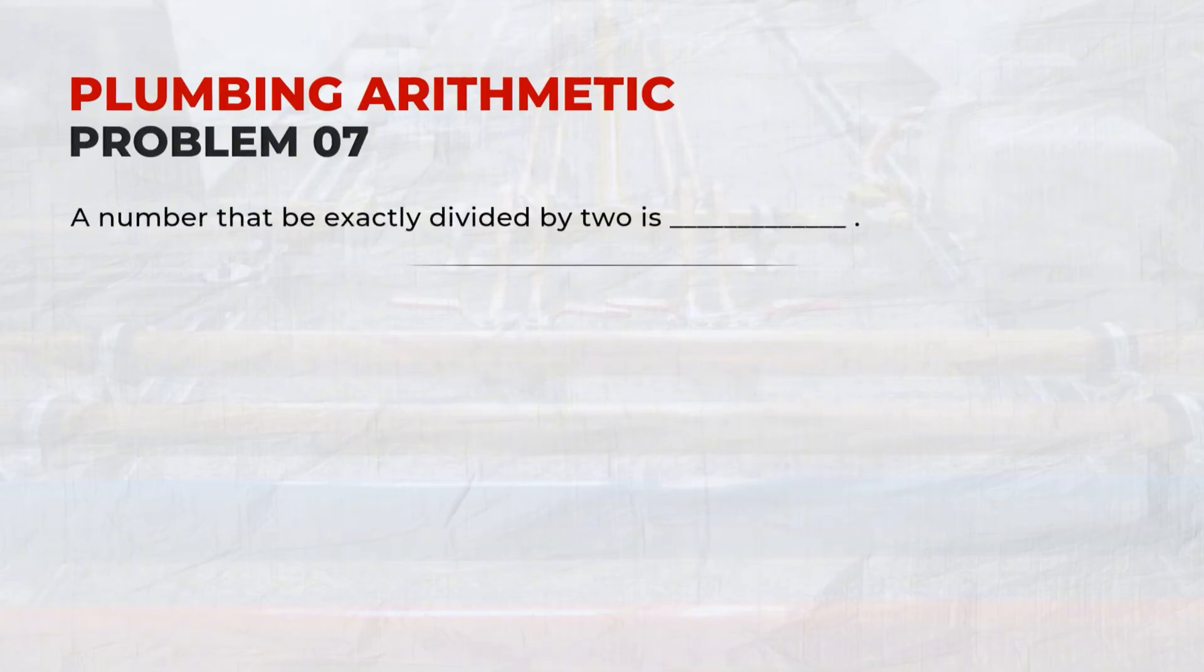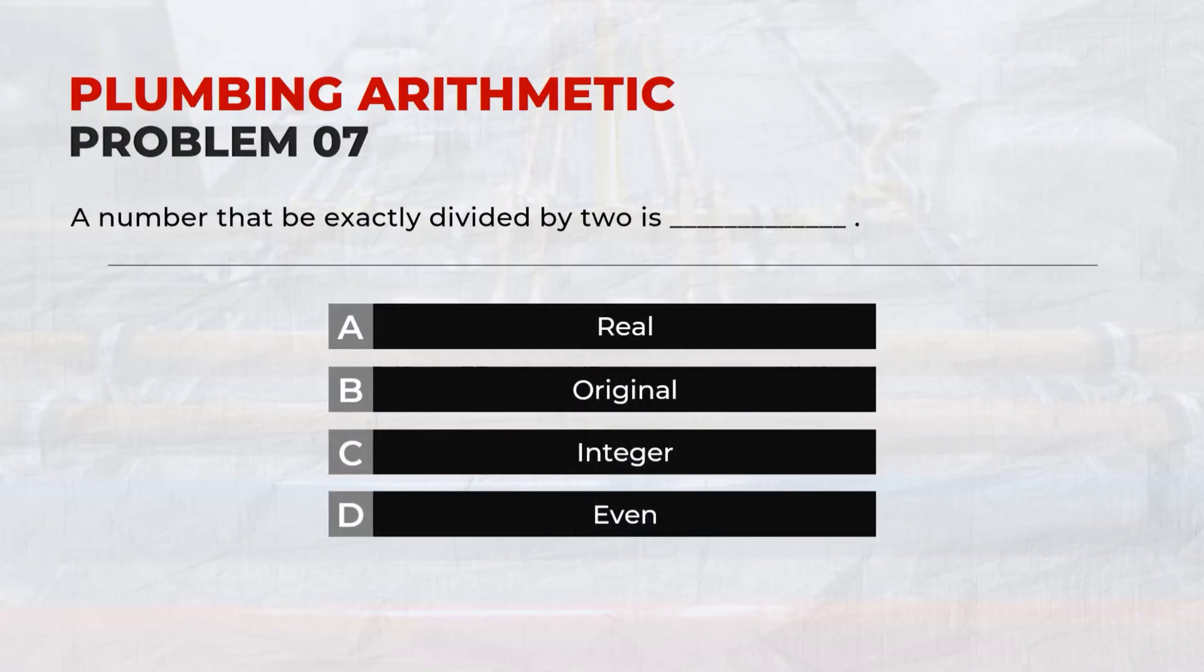A number that can be exactly divided by two is? D. Even.